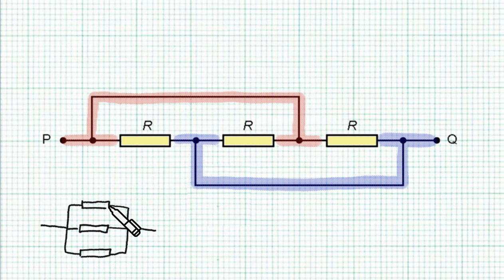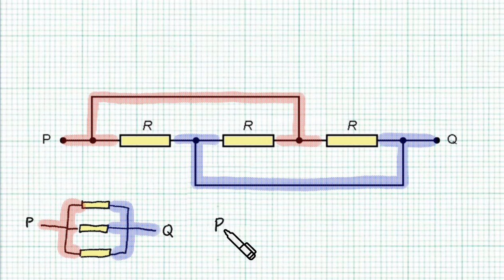So actually these three resistors are connected in parallel. Yup, these two circuits are exactly the same. So the effective resistance between points P and points Q is simply the three R's in parallel. And we know the answer is R over 3.